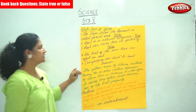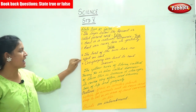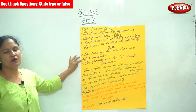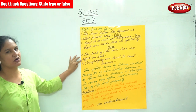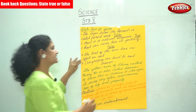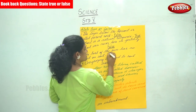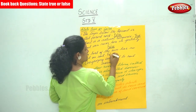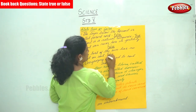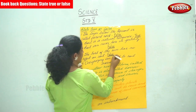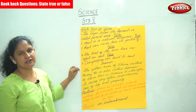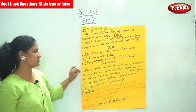The next statement is: the heat of the sun has no effect on soil. Again it is false. We have already seen that the heat of the sun dries up the soil, so this statement is false.